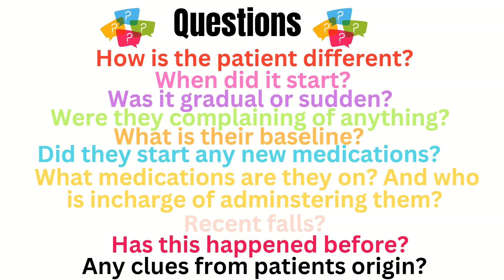These questions help gather crucial information and clues. For example, if it's a gradual decline in an elderly patient, could it be dementia? If the patient was complaining of pain with urination and is now tachyfebrile and hypotensive, could they be in shock from a worsening UTI? Did the patient recently start opioid pain medication and is now altered from taking too much? Did they recently fall while on blood thinners — could they have a head bleed? These questions help guide the team.